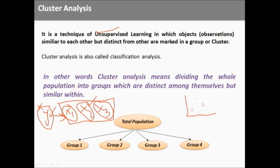Let's say we have a few observations. We identify that these observations are similar within their group but distinct from others. We bundle them into various groups, and these groups are homogeneous within and heterogeneous among. In other words, in cluster analysis, we divide the whole population into groups which are distinct among but similar within.